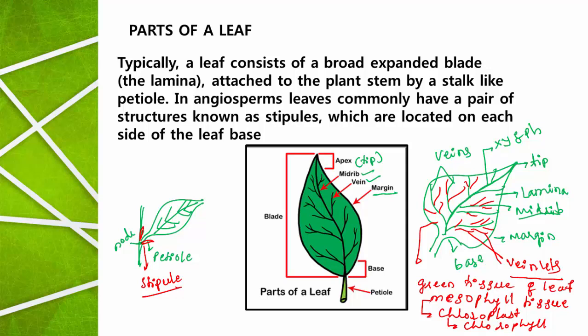The green pigment present in the leaves is chlorophyll. Chlorophyll is present within the chloroplast, the chloroplast is present within the mesophyll tissue, and the mesophyll tissue is present in the leaf — that is why the leaves appear green in color. This covers the parts of the leaf and the primary function of the leaf, which is photosynthesis.